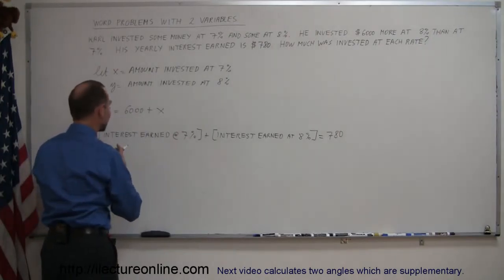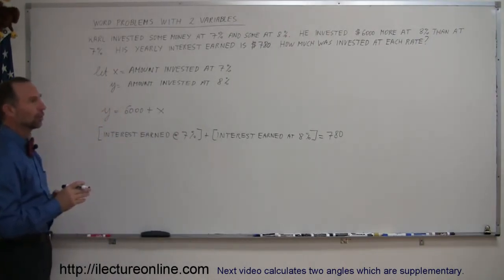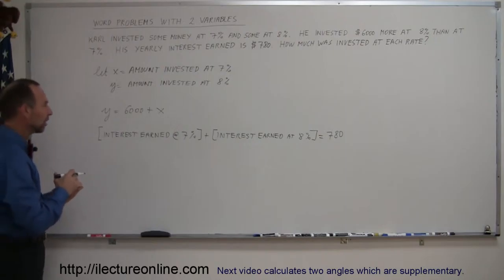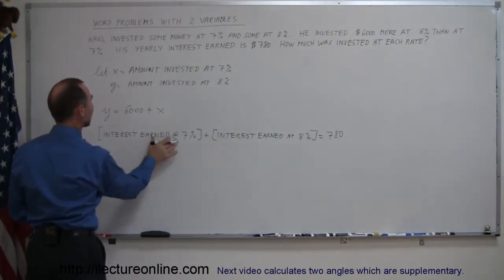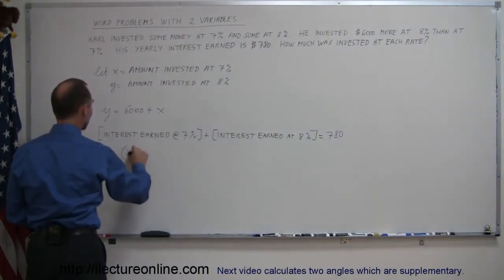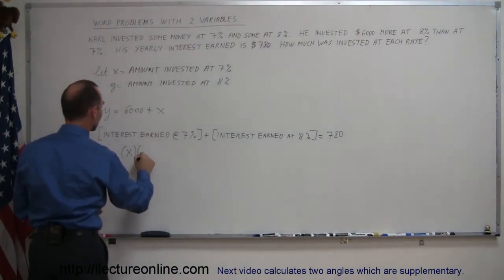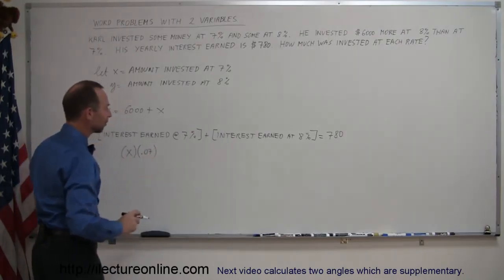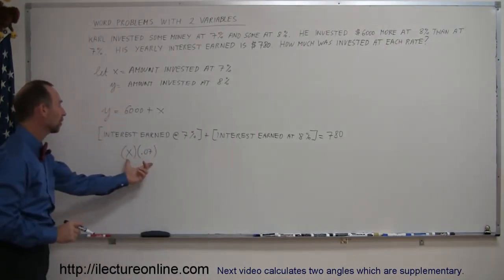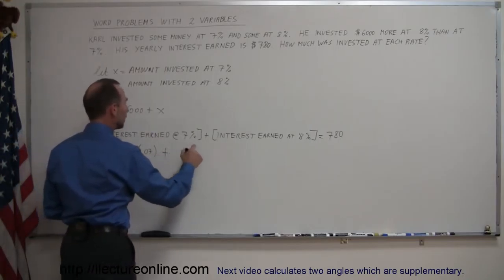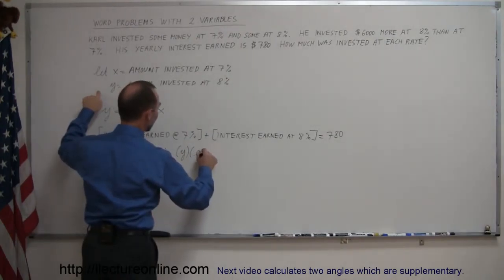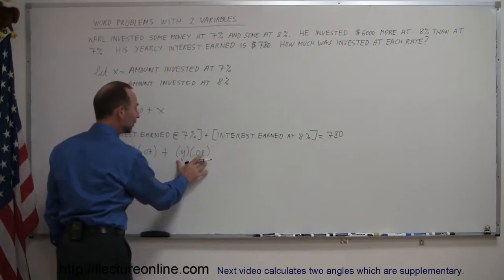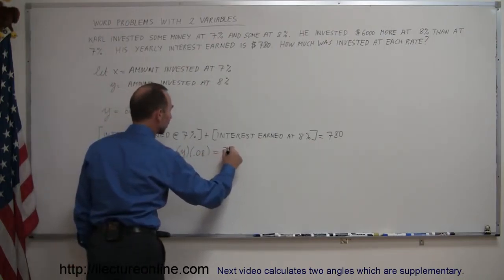Then I go back and express it mathematically. The interest earned at 7% is the amount invested at 7%, which is x, multiplied by the rate 0.07. The interest earned at 8% is the amount invested at 8%, which is y, times 0.08. So the equation becomes: 0.07x plus 0.08y equals 780.